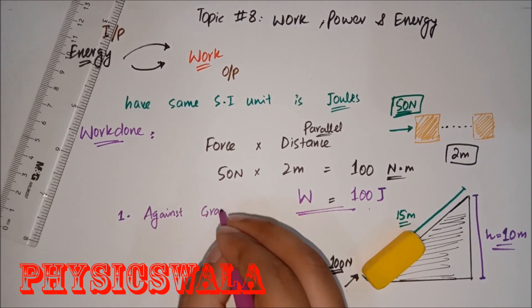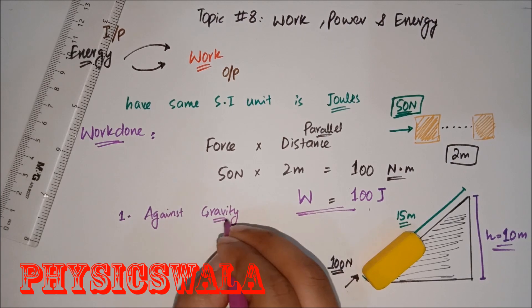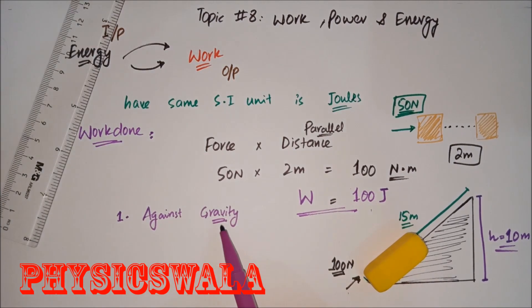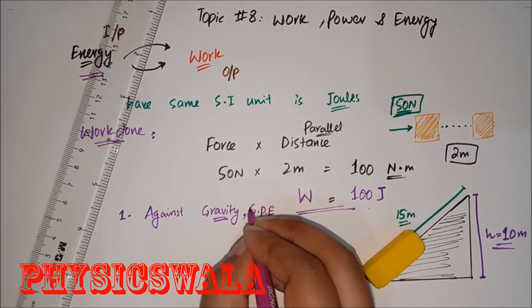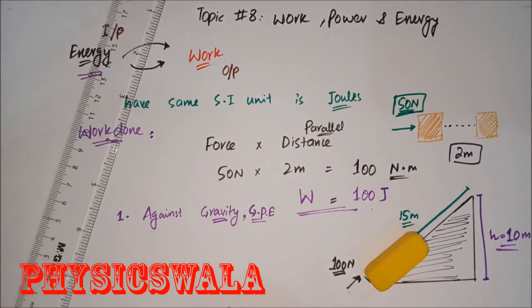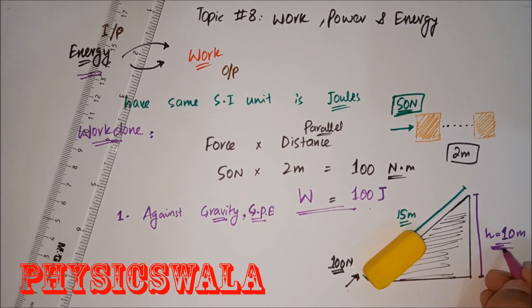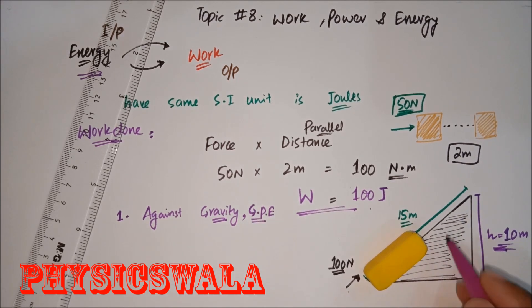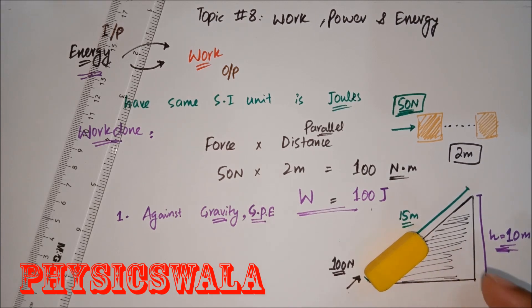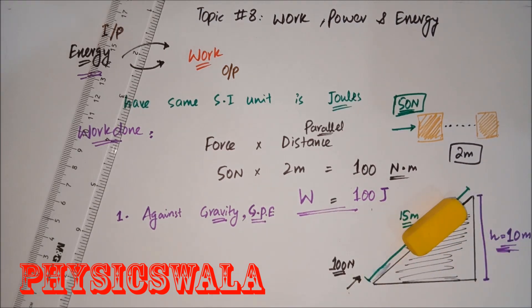But students who forget are saying, what are they saying? Find out or calculate the work done against gravity. Now they use multiple words here: they say gravity, GPE, gravitational potential energy. You need to understand that actually they are talking about not this distance, they are rather talking about this, because this height is against the gravity.